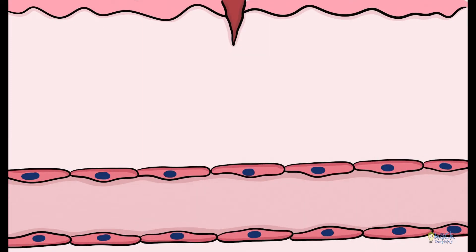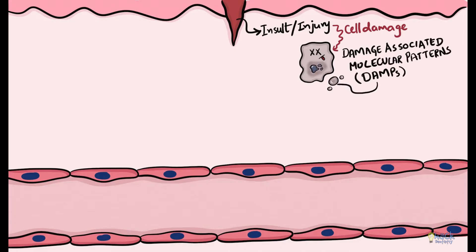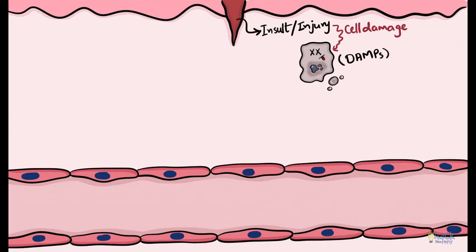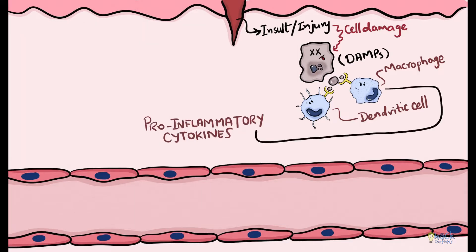The inflammatory response begins with an insult which could be exogenous or endogenous. Any form of insult causes cell damage and damaged cells release certain molecules called damage-associated molecular patterns. These molecules are recognized by receptors on leukocytes like macrophages or dendritic cells, and on recognition leukocytes release pro-inflammatory cytokines.